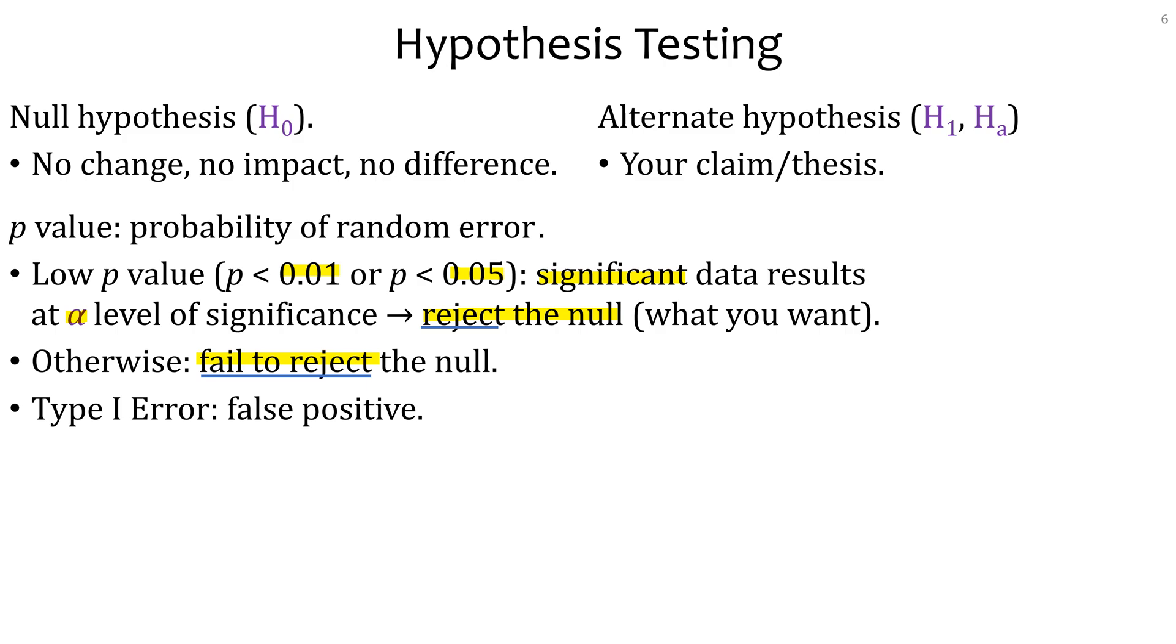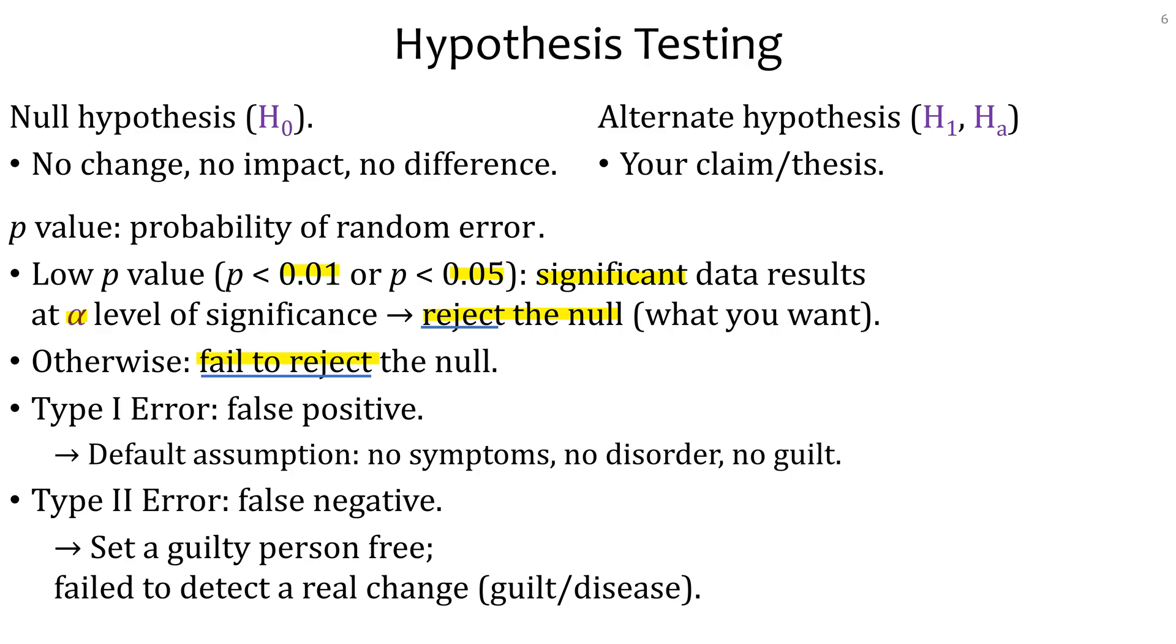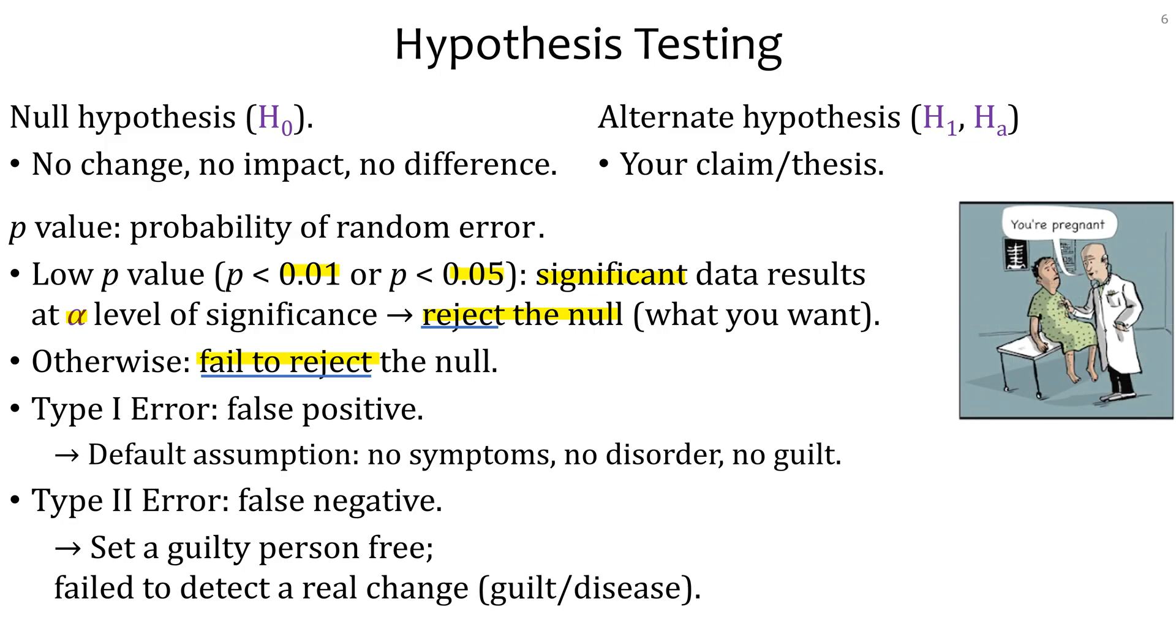Something relevant here is also the two types of errors. Type 1 error is a false positive and type 2 error is a false negative. False positive would be based on your default assumption. The default assumption is that there is no symptoms, no disorder, no guilt. The person in the court is innocent unless proven guilty. Type 1 error is if someone is actually innocent, but you execute them. That would be an error. If someone has no symptoms, they have no disorder, but you think that they do have the disorder. Type 2 error is the opposite. If someone is actually guilty, but you set them free. You don't detect it. You fail to detect some real change, which could be like a crime or a disease.